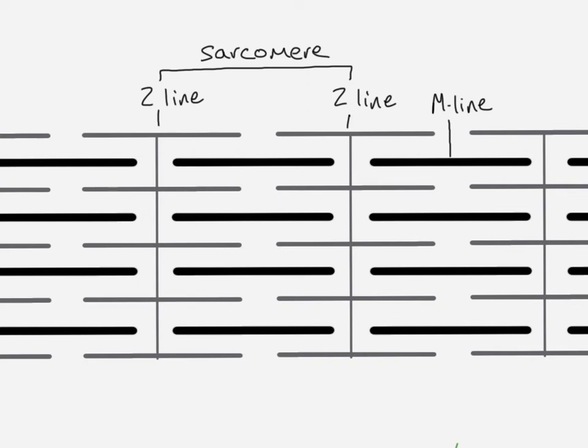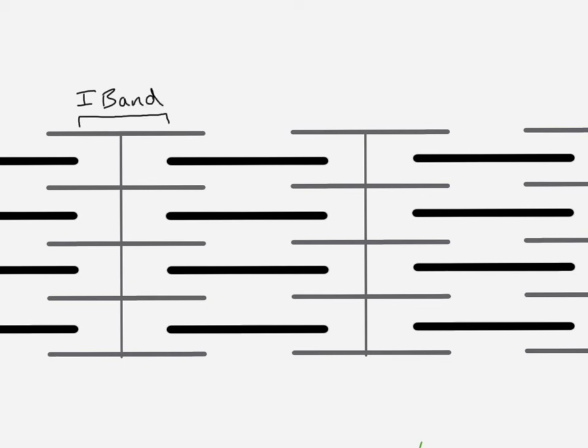The M-line is shown here — it's similar to the Z-line and is located in the middle of the sarcomere. This is where proteins hold the myosin filaments in place. You don't always draw the M-line, but that is where it is and what it means.